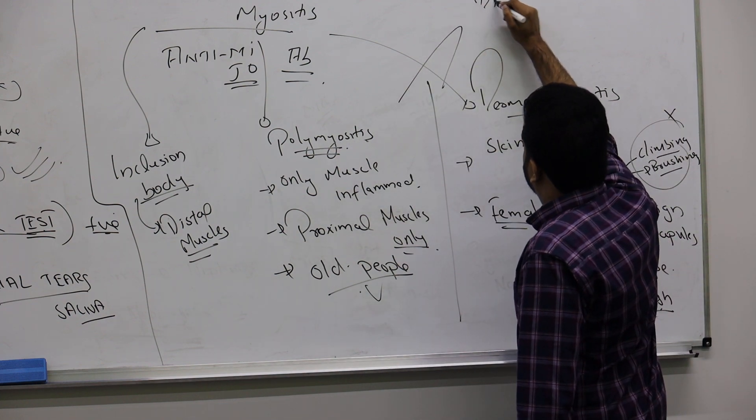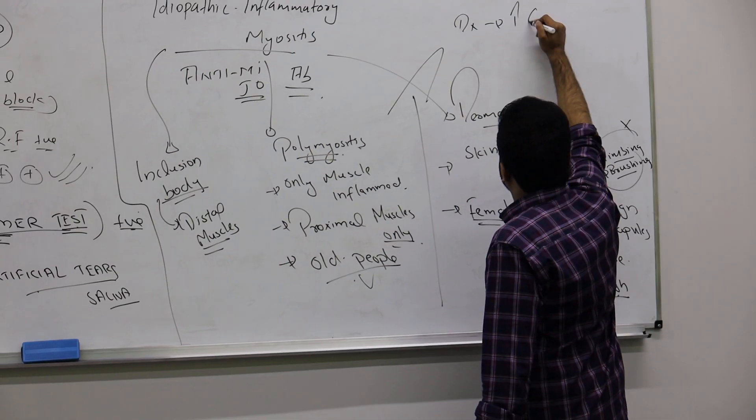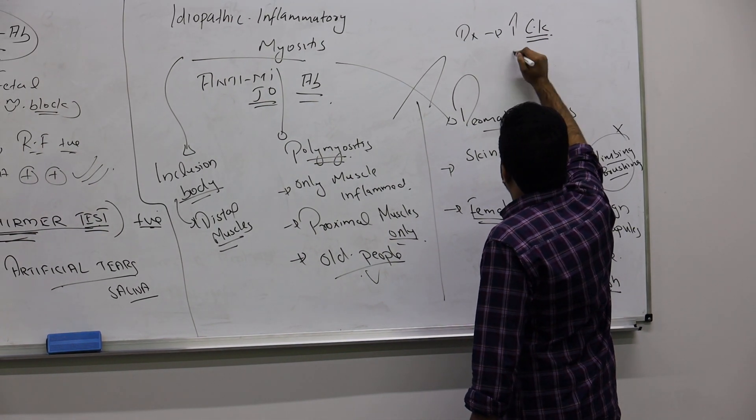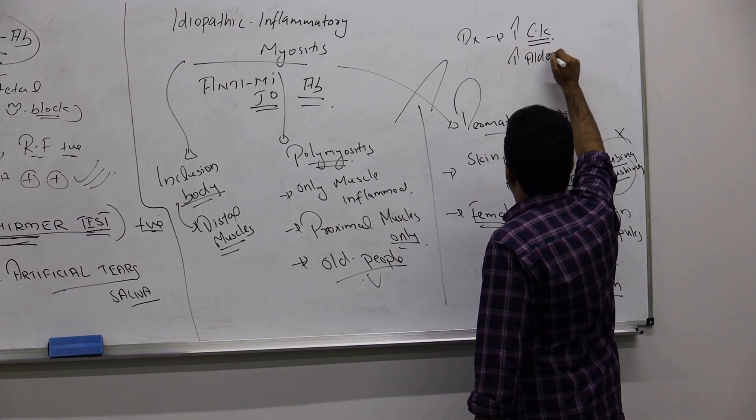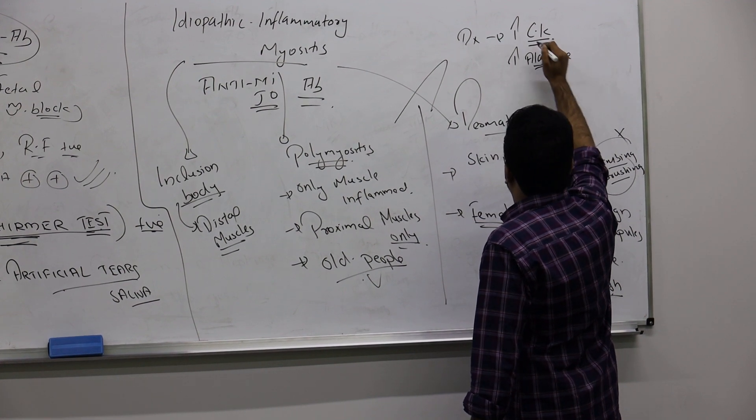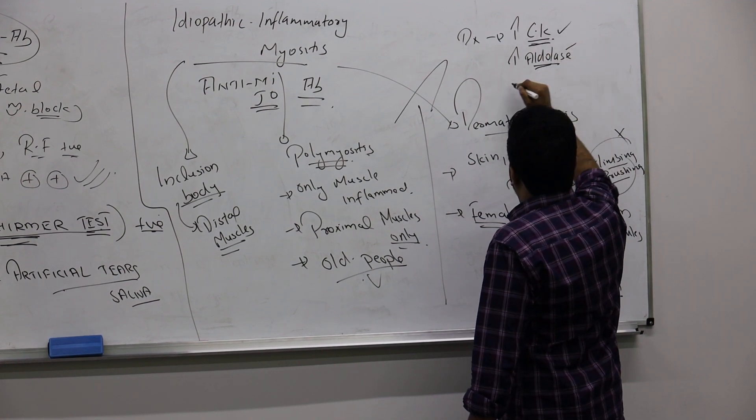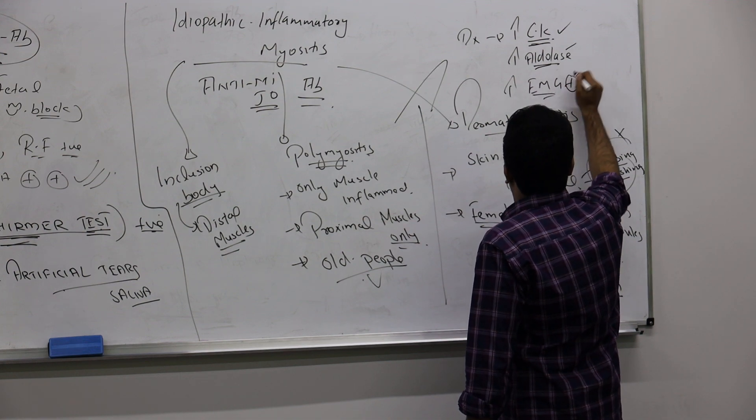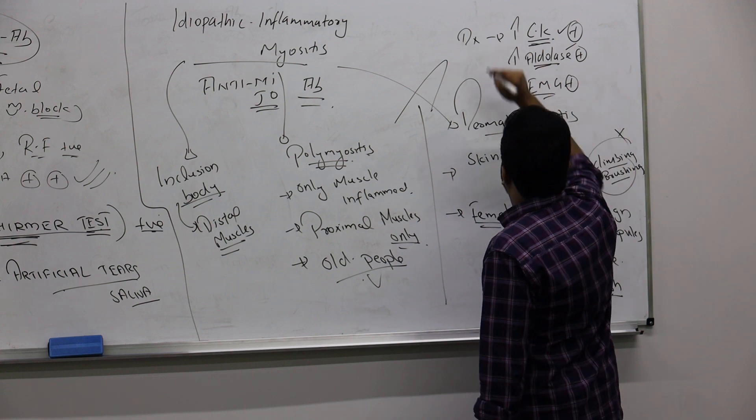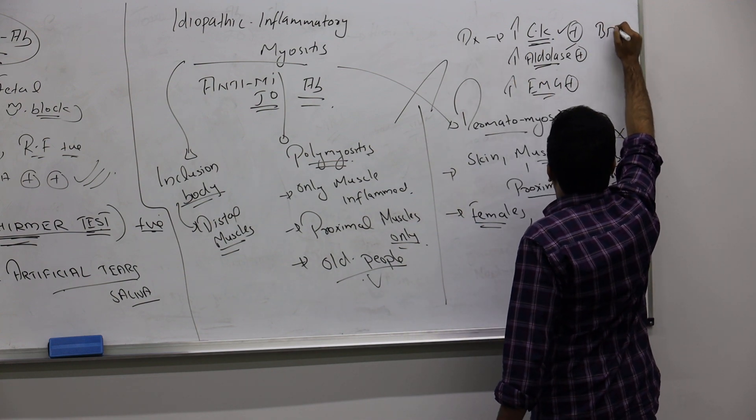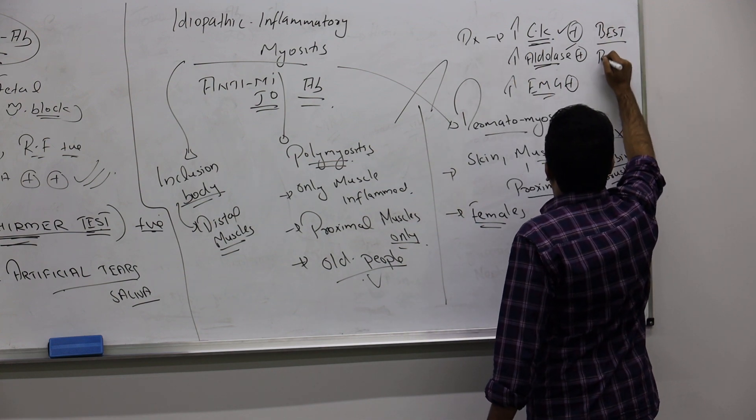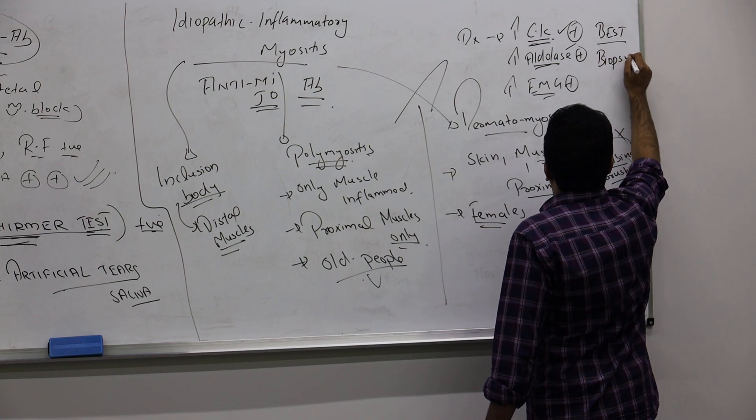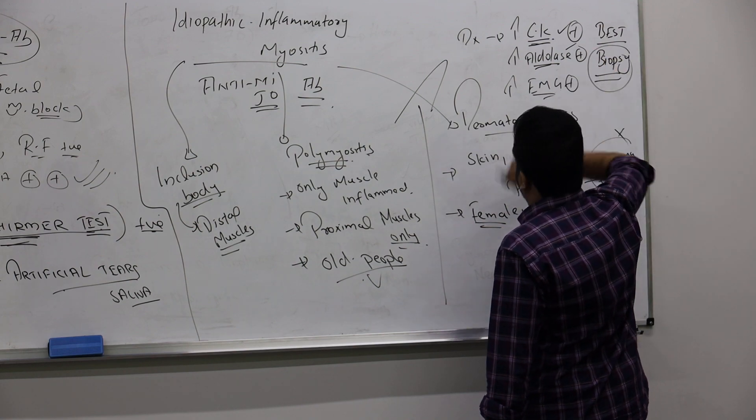For diagnosing, you can see increase in creatine kinase, increase in aldolase enzyme, and if you do EMG, electromyography, this all will be positive. But if someone asks you the best one, the best one always will be biopsy. The best one if you get all the options.